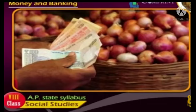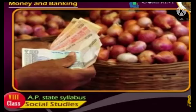Money is divisible. There are rupees and paise. Commodities like vegetables should be exchanged immediately because they are perishable. This problem is removed when commodities are sold for money. Money is durable and it can be kept for future use.